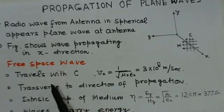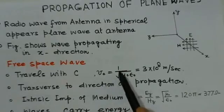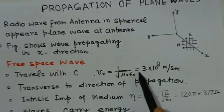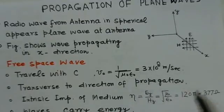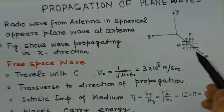The wave travels with c, the velocity of light, given by v₀ = 1/√(μ₀ε₀) which equals 3×10⁸ meters per second. This is the propagation velocity for free space plane waves.